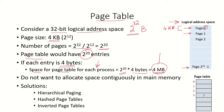We do not want to allocate this large space as contiguous space in main memory, because if each process has a page table of this size, finding contiguous space in main memory becomes a challenge. The solutions to this problem are hierarchical paging, hashed page tables, and inverted page tables. In this video we are going to look at hierarchical paging.